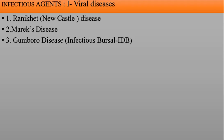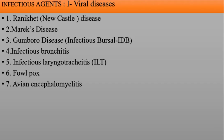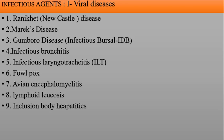There are many types of viral diseases in the poultry industry. These include: Ranikhet disease or Newcastle disease, Marek's disease, Gumboro disease — also known as Infectious Bursal Disease — Infectious Bronchitis, Infectious Viral Laryngotracheitis (ILT), Fowl Pox, Avian Encephalomyelitis, Lymphoid disease, Inclusion Body Hepatitis, and Infectious Viral Arthritis. These diseases are caused by infectious viral agents.